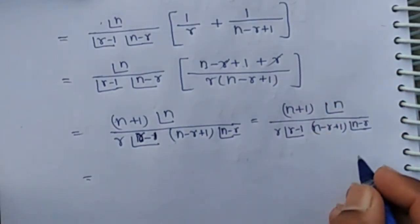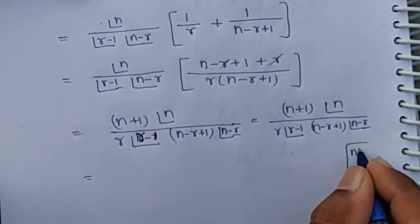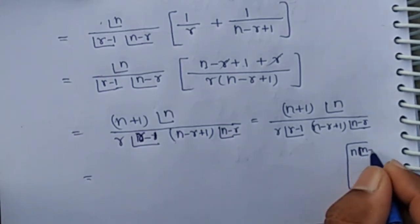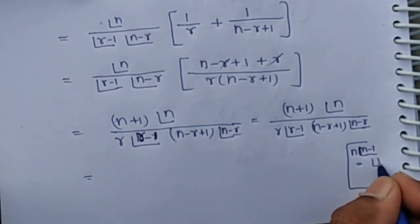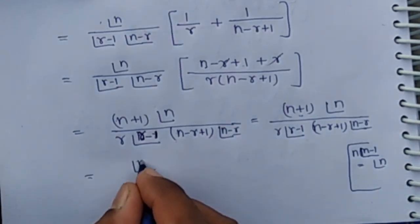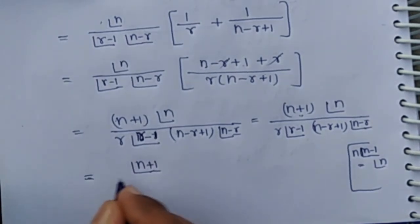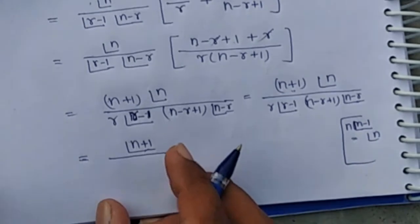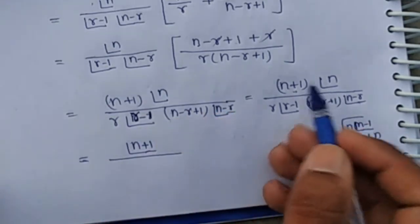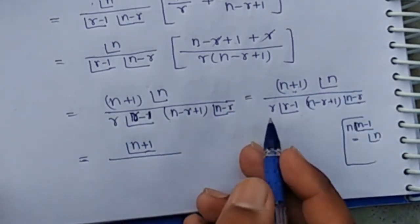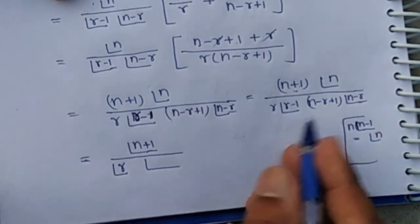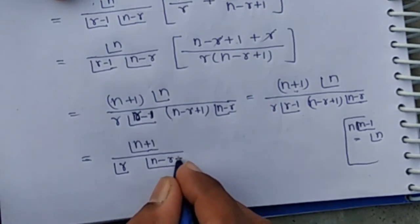Since we know that n times factorial n minus 1 equals factorial n, then n plus 1 times factorial n equals factorial n plus 1. This means factorial n plus 1 can be written as n plus 1 times factorial n. Also, r times factorial r minus 1 equals factorial r, and it is n minus r plus 1.